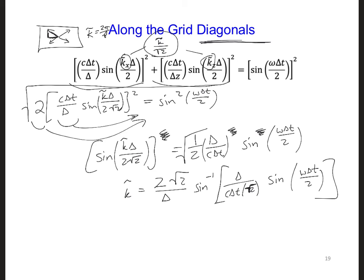So this is the same expression as what we got along the grid axis except the only difference is that we have a square root of 2 here added in and another square root of 2 right there.